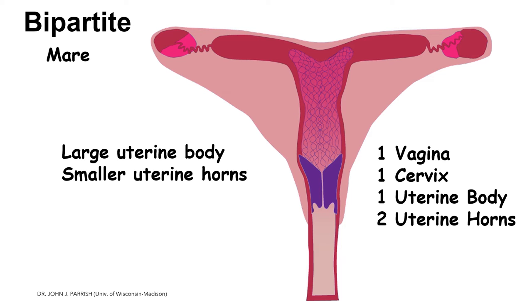In the mare, the uterus is also bicornuate and was previously called bipartite. It is called bicornuate because it is composed of two uterine horns, one uterine body, one cervix, and one vagina. The mare has a relatively large uterine body and short, poorly developed uterine horns, due to a high degree of fusion of the paramesonephric ducts.